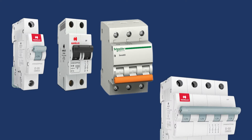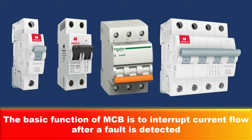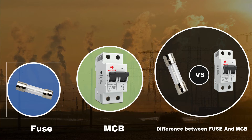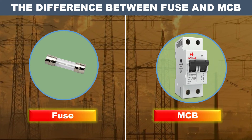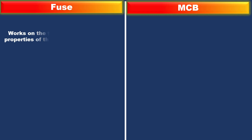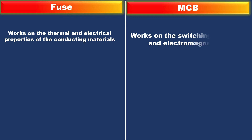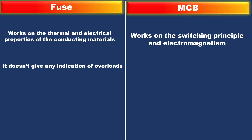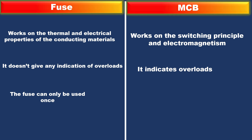Now, what is the difference between a fuse and a circuit breaker? A fuse works on the thermal and electrical properties of conducting materials, while an MCB works on the switching principle and electromagnetism. A fuse does not give any indication of overload, while an MCB indicates overload. Also, a fuse can only be used one time, whereas a circuit breaker can be used many times.